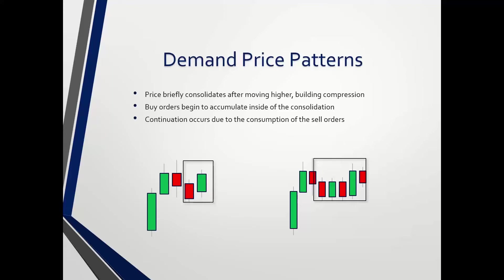So, continuation. We said here's a pattern — these are candles on a chart, could be a minute, tick, volume, and so on. It briefly consolidates and that's how we know we're starting to see the pattern. Inside of that pattern it's accumulating. The continuation is probably the most important part — it occurs due to the consumption of the sell orders. If we're moving up then pausing sideways, the continuation tells us who got consumed: buyers or sellers. In this case, for demand patterns, sell orders were consumed, confirmed because price moved higher — what we call the departure.